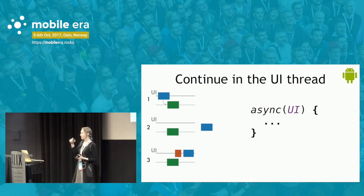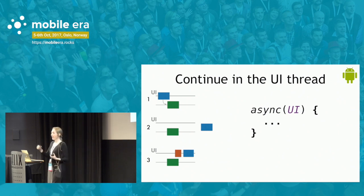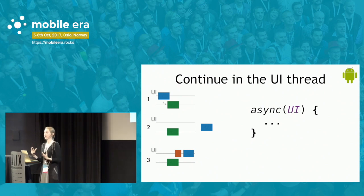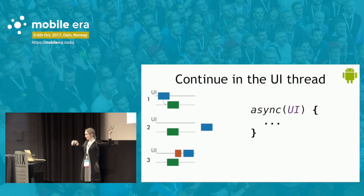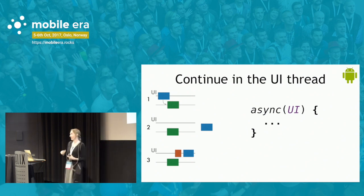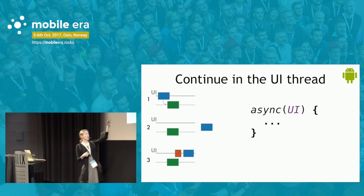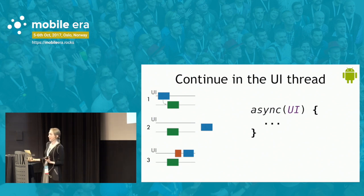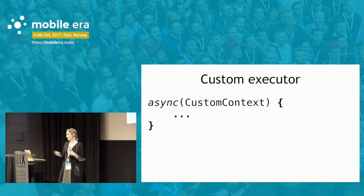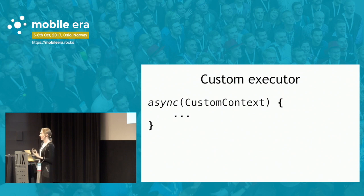For Android, you may specify that you want to start a coroutine in the UI thread by providing the UI context. That means the coroutine may be started and continued after suspension only on the main thread. If the main UI thread was busy while the coroutine was suspended, it will be continued only when the thread is free. So we suspend the computation, and while it's suspended we can do something else on the UI thread.